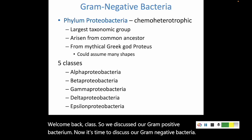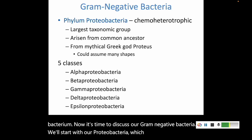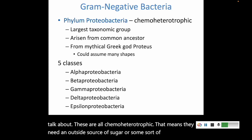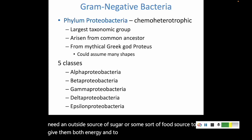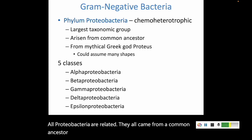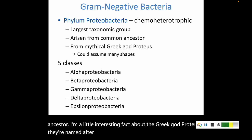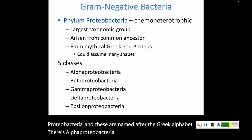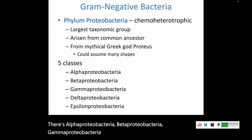We'll start with our phylum Proteobacteria, which is the largest group we'll talk about. These are all chemoheterotrophic, meaning they need an outside source of sugar or some sort of food source to give them both energy and carbon to build their own materials. All proteobacteria are related — they all came from a common ancestor. There are five classes within the proteobacteria, named after the Greek alphabet: alpha, beta, gamma, delta, and epsilon proteobacteria.